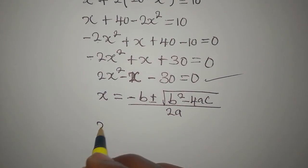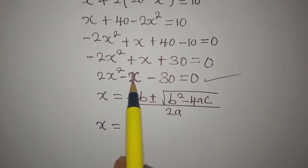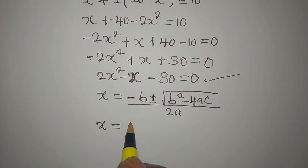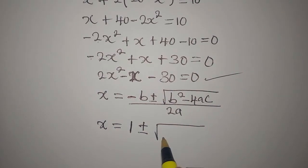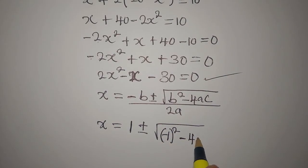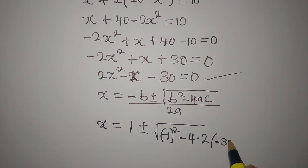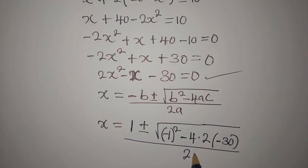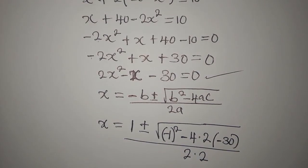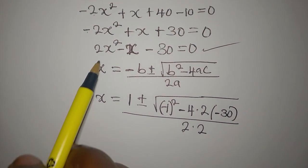Now our x will be — remember the coefficient of x is minus 1, so minus minus turns to plus, giving us plus 1. Plus or minus, b squared will be minus 1 squared in brackets, then minus 4 times a which is 2, times c which is minus 30. Then we divide by 2 times a, which is 2, because a is the coefficient of x squared.